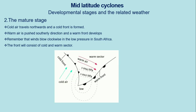The second stage is called the mature stage. In this stage, cold air travels northwards and a cold front is now fully formed. When the cold front forms, a warm sector also develops, as the warm front forms as well. Warm air pushes toward the warm front while cold air pushes toward the cold front.